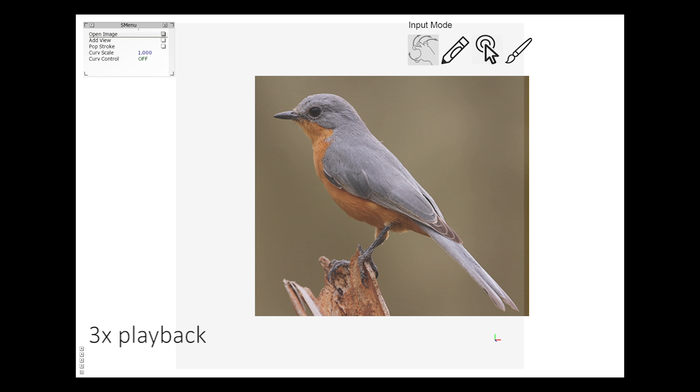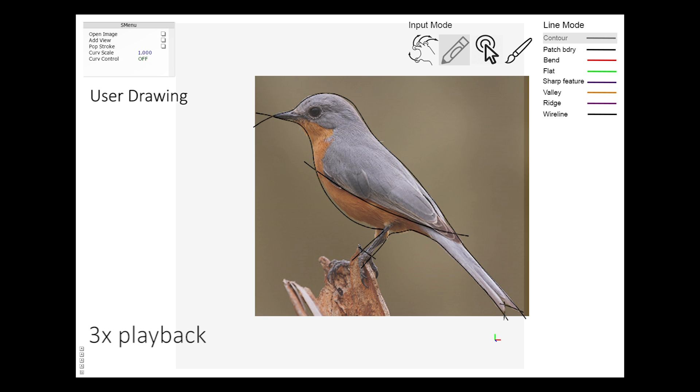First is the bird example. After loading the reference image, we draw the contour lines first. As the strokes close up, the 2D domain is constructed automatically.